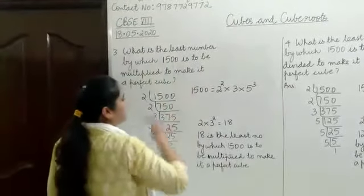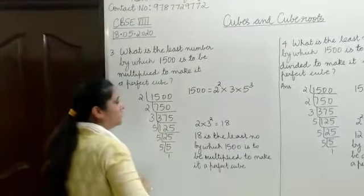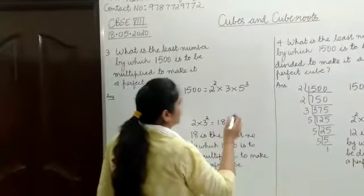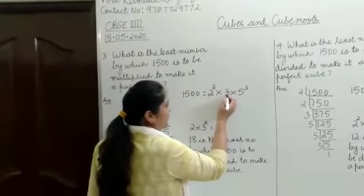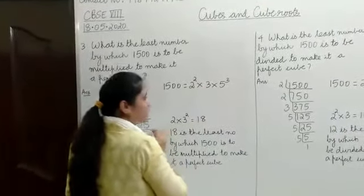Since the question is what is the least number to be multiplied, you need to introduce factors so that the prime factors 2 and 3 can be written with the power 3.